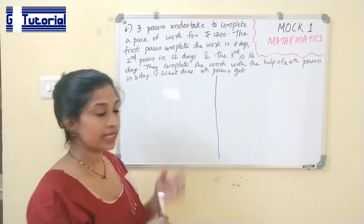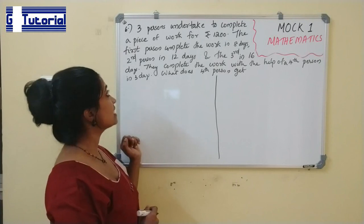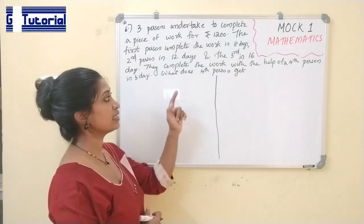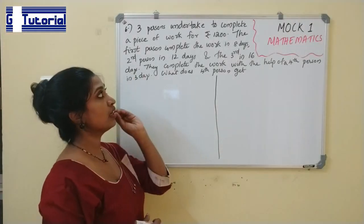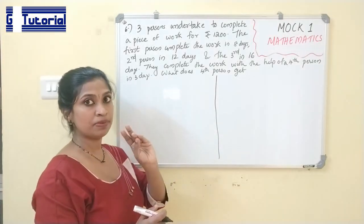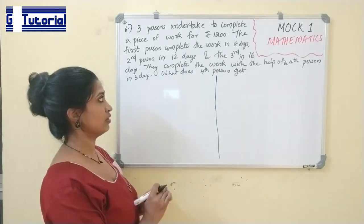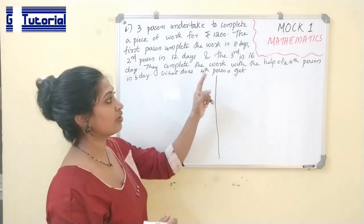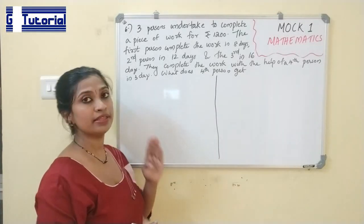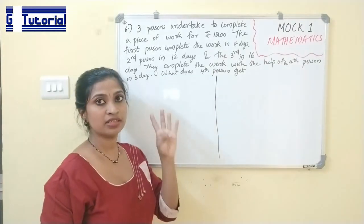Next question: three persons undertake to complete a piece of work for Rs. 1200. The first person completes the work in 8 days, the second in 12 days, and the third in 16 days. They complete the work with the help of a fourth person in 3 days. What does the fourth person get? We need to find the share of the fourth person D.